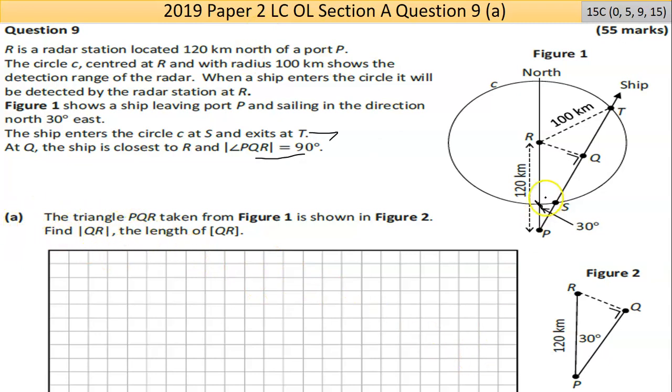The triangle PQR is shown in figure two. Find QR, so find actually that length there. First thing is the right angle triangle. So my brain is going sine, cos, tan, or Pythagoras. Pythagoras won't work here, because I only have one of the three sides. If I knew this side and this side, I could choose Pythagoras to find the missing side. So it's going to be either sine, cos, or tan.